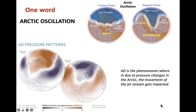The Arctic Oscillation has a positive and a negative phase. During the positive phase, a low pressure is seen near the Arctic region. Due to the low pressure near the Arctic, the cold air is able to stay near the polar region. Thereby, the jet stream is able to move smoothly without any undulation, so the jet stream is highly stable.